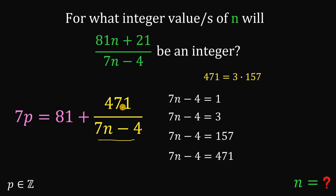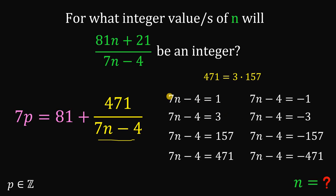Since p is an integer and the expression is also an integer, we need to include negative factors of 471 as well. Testing (7n - 4) = 1: adding 4 to both sides gives 7n = 5, which has no integer solution — not accepted. Testing (7n - 4) = -1: adding 4 gives 7n = 3, which also has no integer solution.